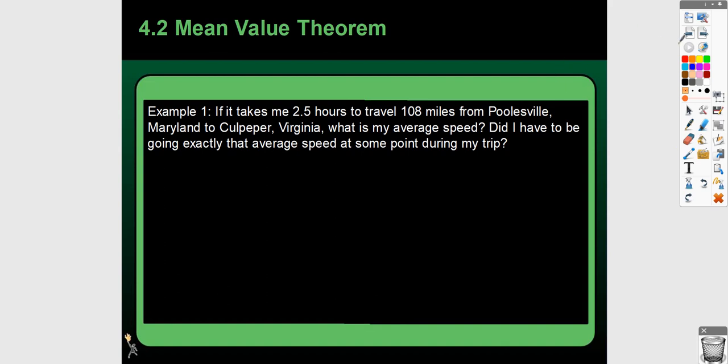Okay, so this is 4.2, which is Mean Value Theorem. I think in the last video I said that we were going to be looking at relative extrema in 4.2, but that's 4.3. So this one is Mean Value Theorem.